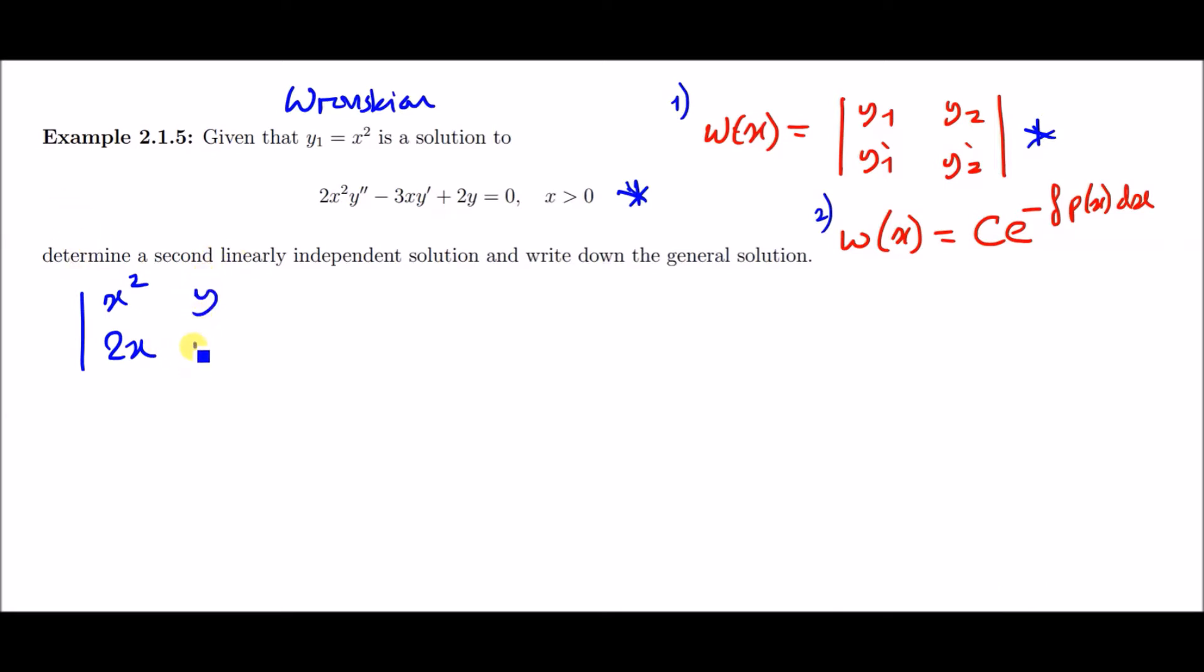This is going to equal the second Wronskian equation. For simplicity we're going to set c to equal 1 because it's not going to have a big impact. This is going to equal the exponential of minus the integral. For the p(x) variable, p(x) is simply the coefficient of y prime over the coefficient of y double prime, so in other words minus 3x over 2x squared, and then dx.